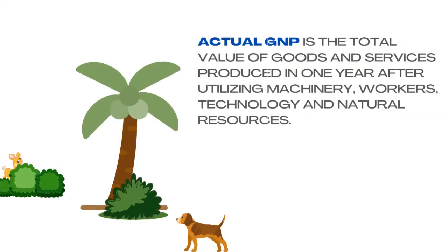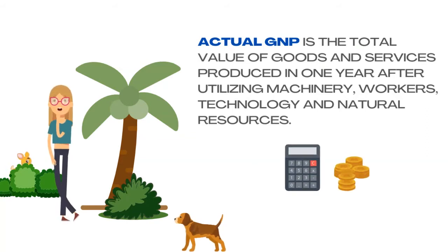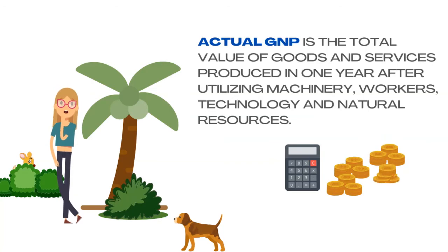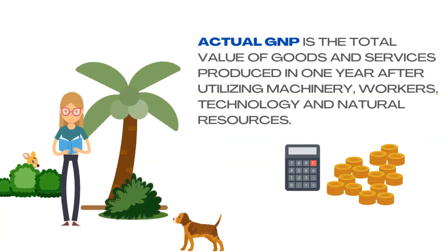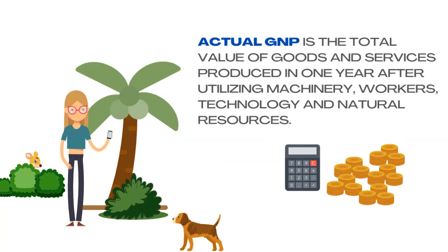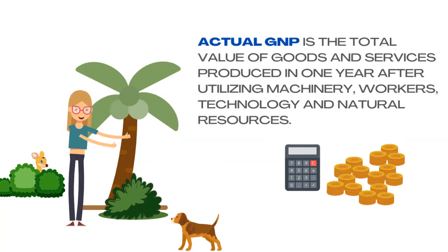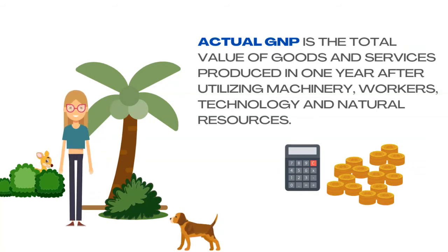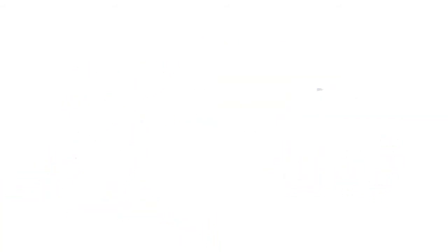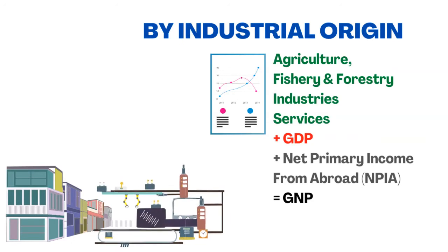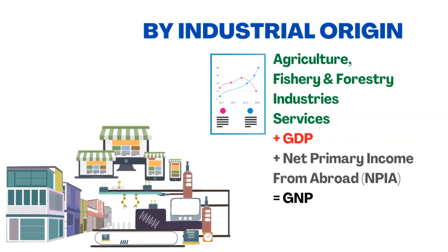We get actual GNP when we measure the total value of goods and services produced in one year after utilizing machinery, workers, technology, and natural resources. It is good to measure actual GNP versus potential GNP because it shows if the country is efficient and effective in using its workers, machinery, technology, and natural resources.